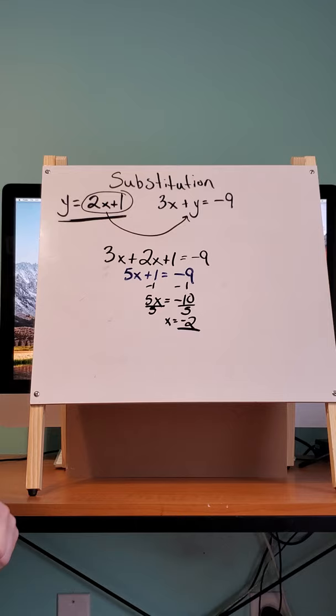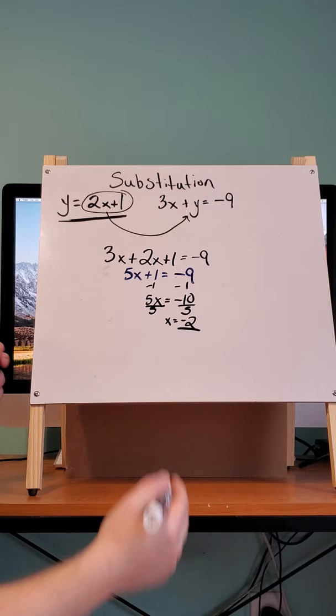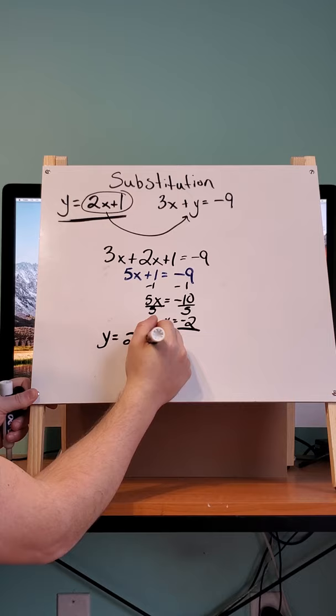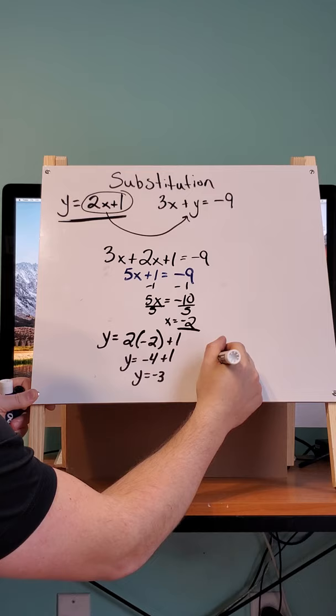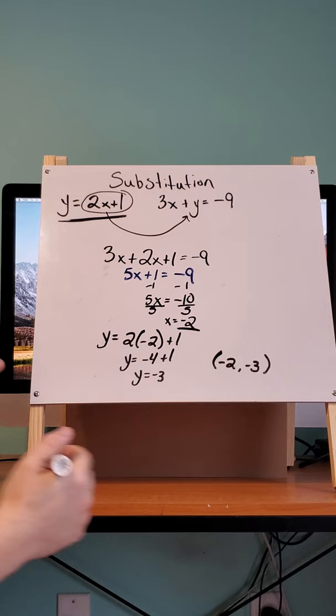So now that we have x equals negative 2, to get our y, we're just going to plug this negative 2 in for x to either of the first equation or the second equation, and we'd get the same y. So we're just going to plug it into the first one. And we're going to get y equals negative 3. So then where these two lines would cross is negative 2, negative 3.